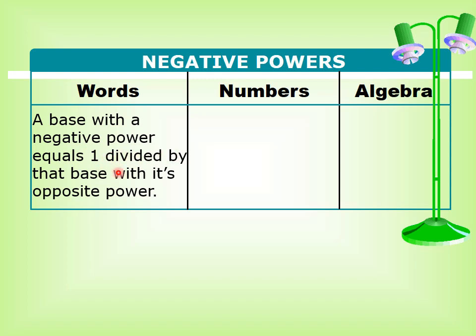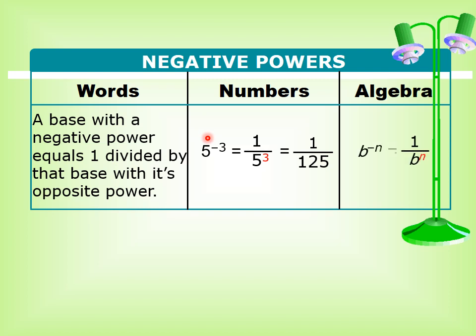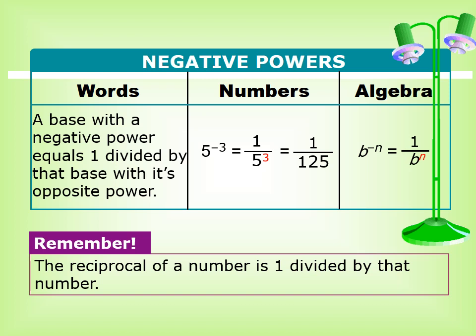The rule for negative powers: a base with a negative power equals 1 divided by that base with its opposite power. For example, 5 power negative 3 equals 1 over 5 power 3. Since 5 power 3 equals 125, this value equals 1 over 125. The main rule is: b power negative n equals 1 over b power n.